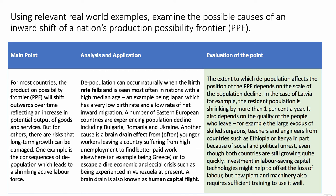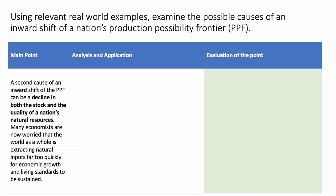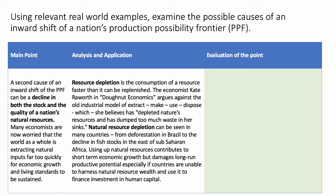We're making our point — depopulation is the main point — and trying to analyze, evaluate, and apply the concept with evaluation points included. A second cause of an inward shift of the PPF is a decline in both the stock and the quality of a nation's natural resources, otherwise known as natural capital. Many people, not just economists, are deeply worried by the rate at which we're extracting natural resources and the extent to which this is threatening sustainable living standards. Resource depletion is a really important concept — that's where a resource is consumed faster than it can be replenished.